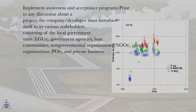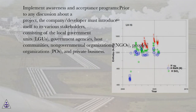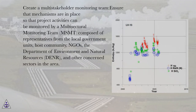Implement awareness and acceptance programs. Prior to any discussion about a project, the company or developer must introduce itself to its various stakeholders, consisting of the local government units (LGUs), government agencies, host communities, non-governmental organizations (NGOs), people's organizations (POs), and private business. Create a multi-stakeholder monitoring team to ensure that mechanisms are in place so that project activities can be monitored by a multi-sectoral monitoring team (MSMT).